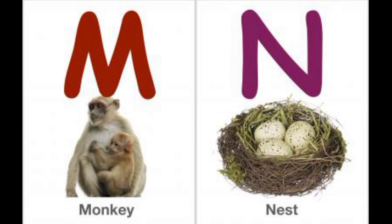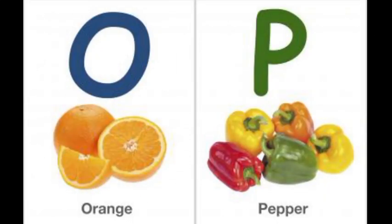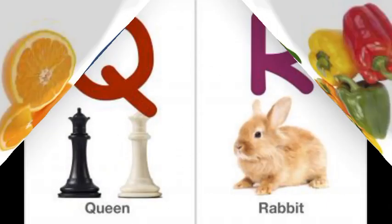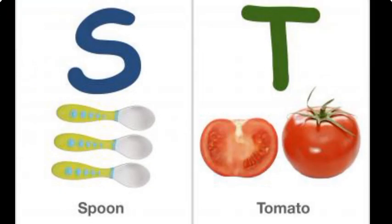M for Monkey, N for Nest, O for Orange, P for Pepper, Q for Queen, R for Rabbit, S for Spoon, T for Tomato.